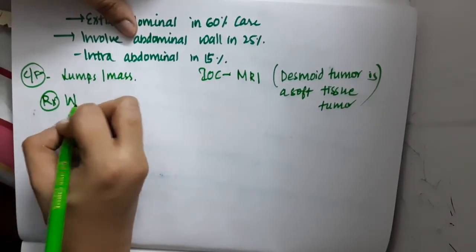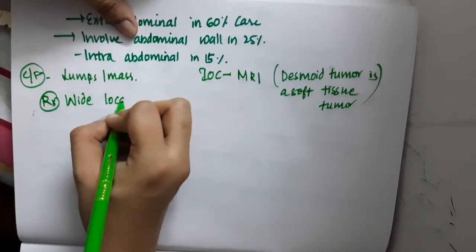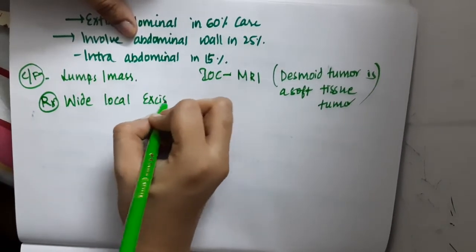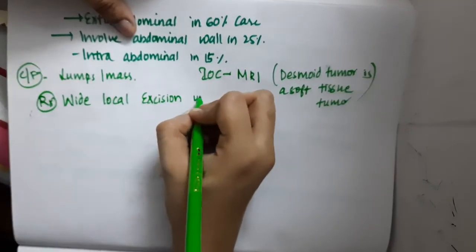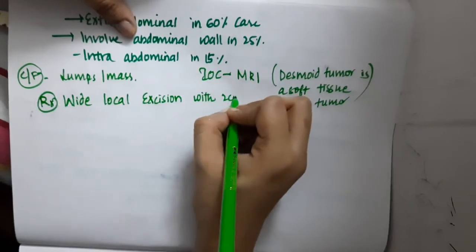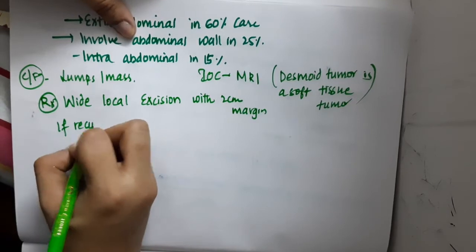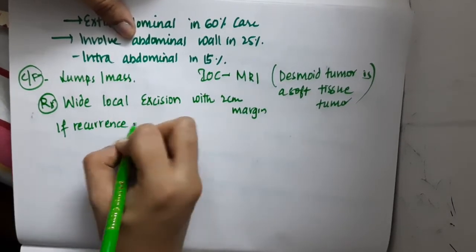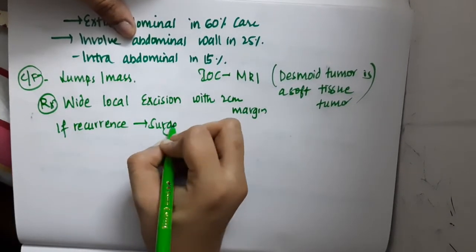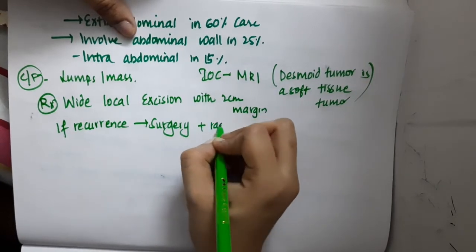What about the treatment? In the treatment, you should do wide local excision. Because of increased recurrence rate, wide local excision should be done with 2 cm margin. If there is any recurrence, then you should do surgery plus radiotherapy.